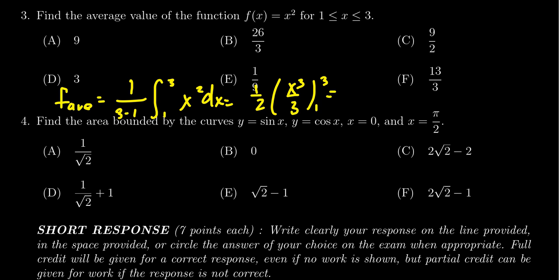The one half times one third gives us one sixth. We then are going to take the cube of three, which is 27, and we subtract from that the cube of one, which is likewise one.